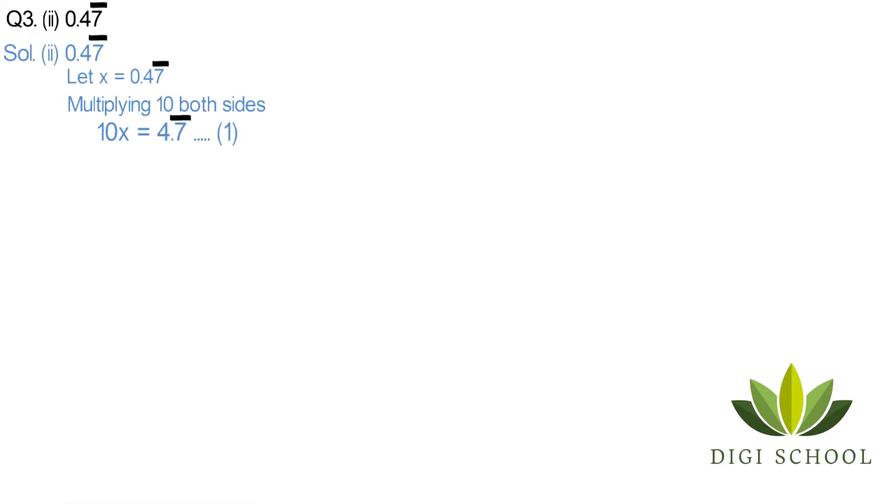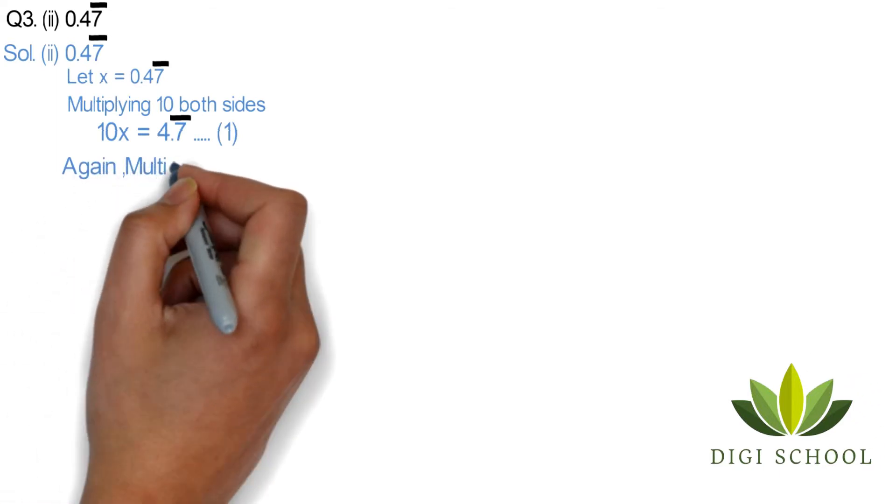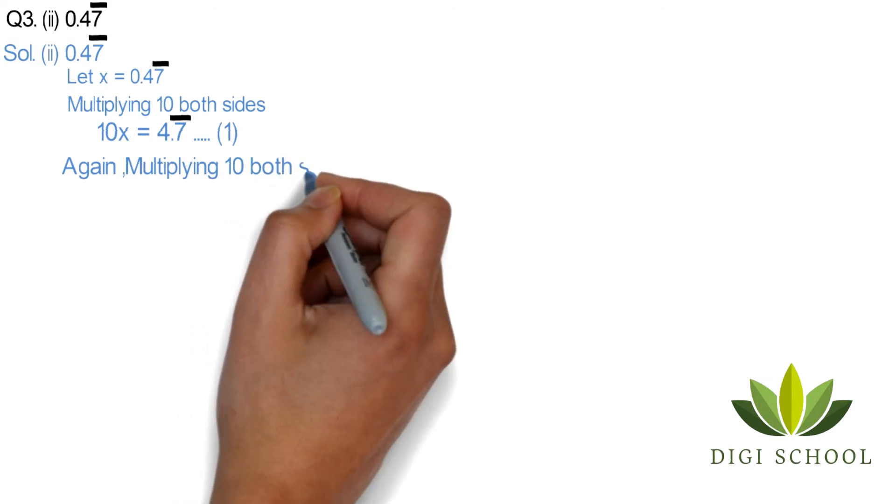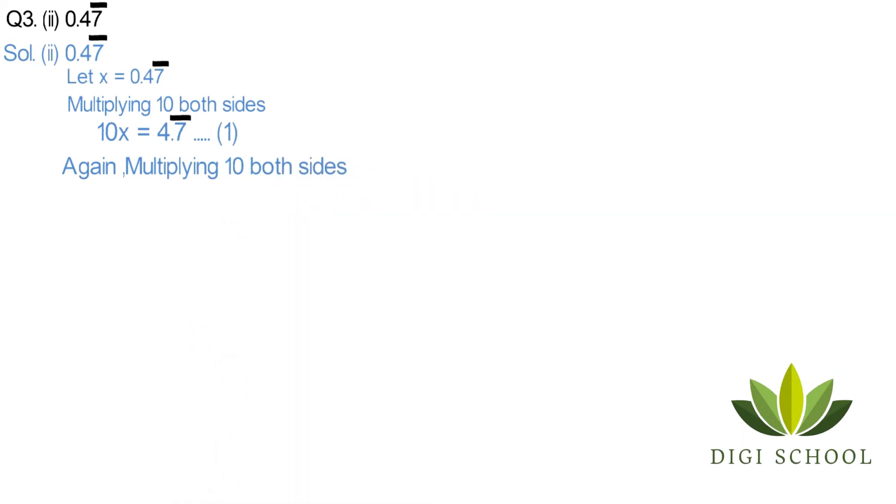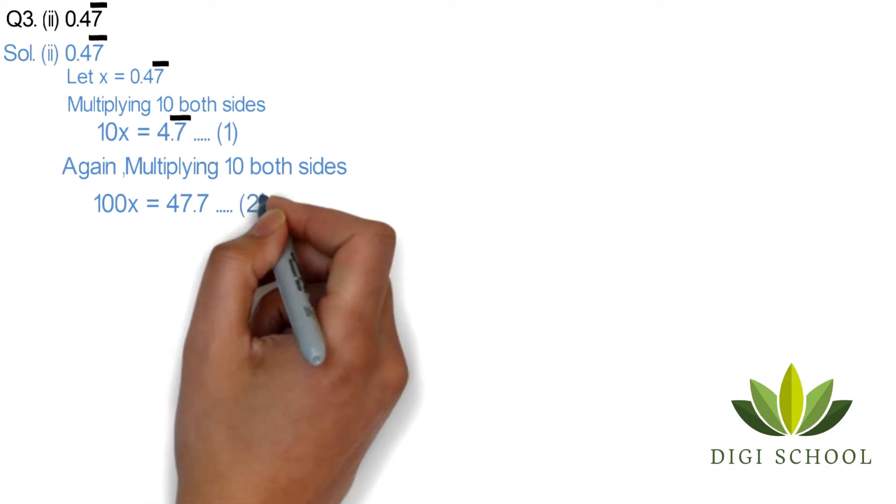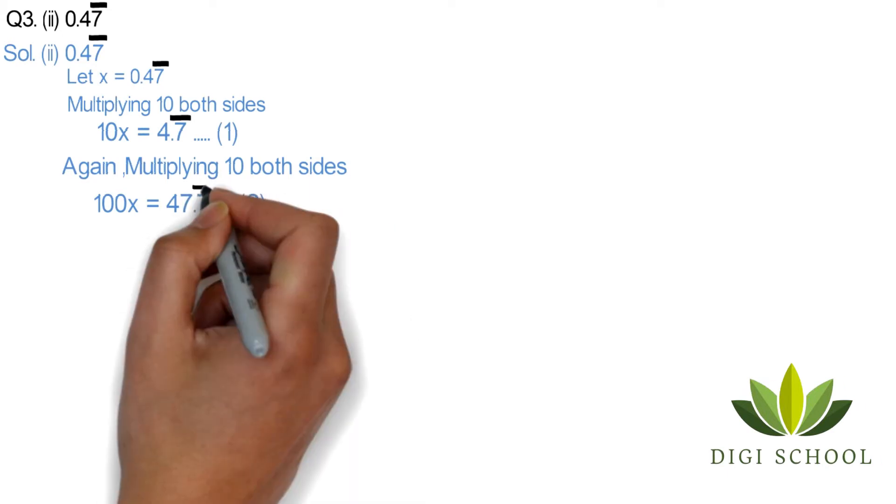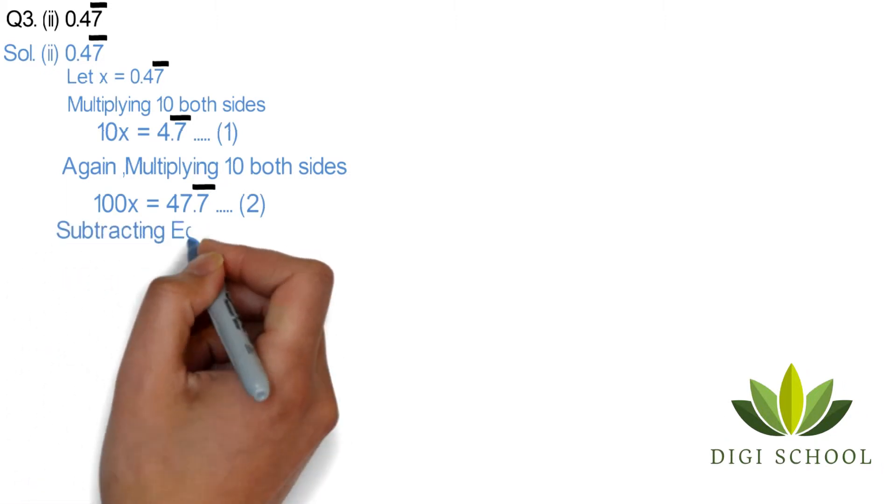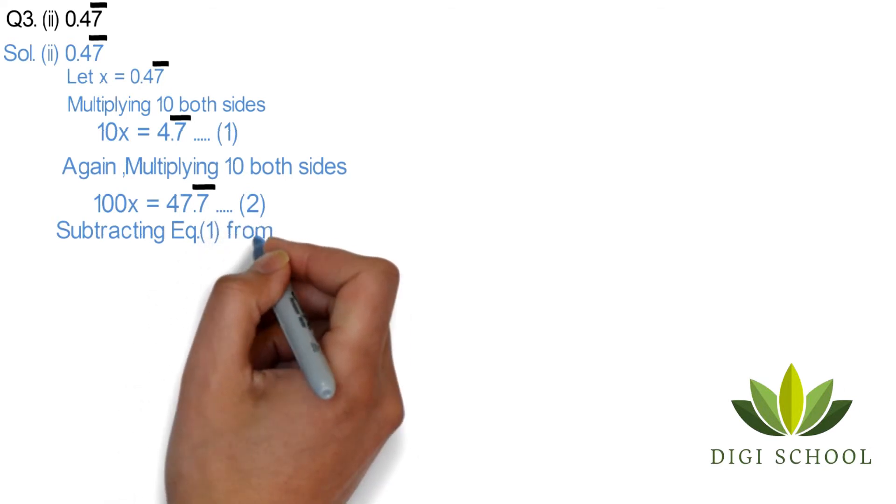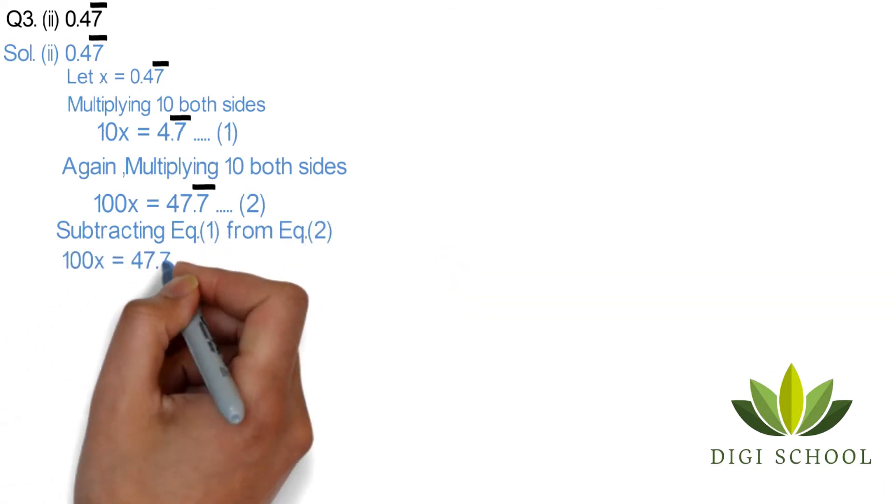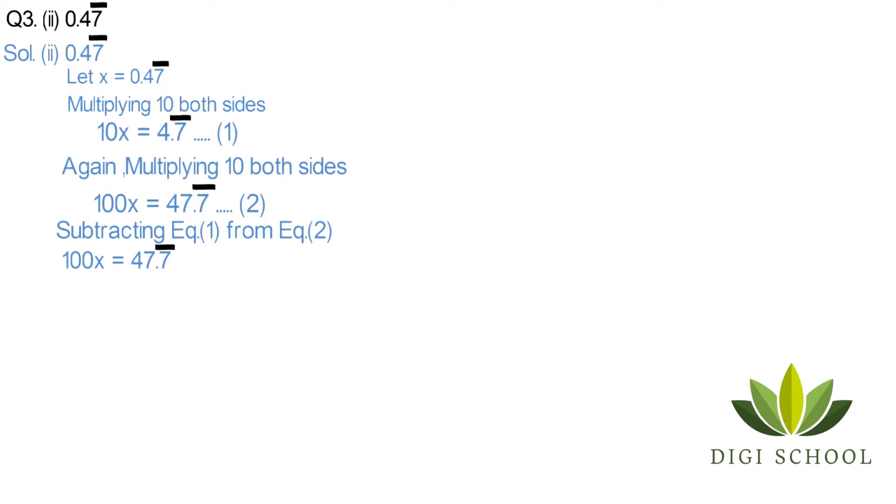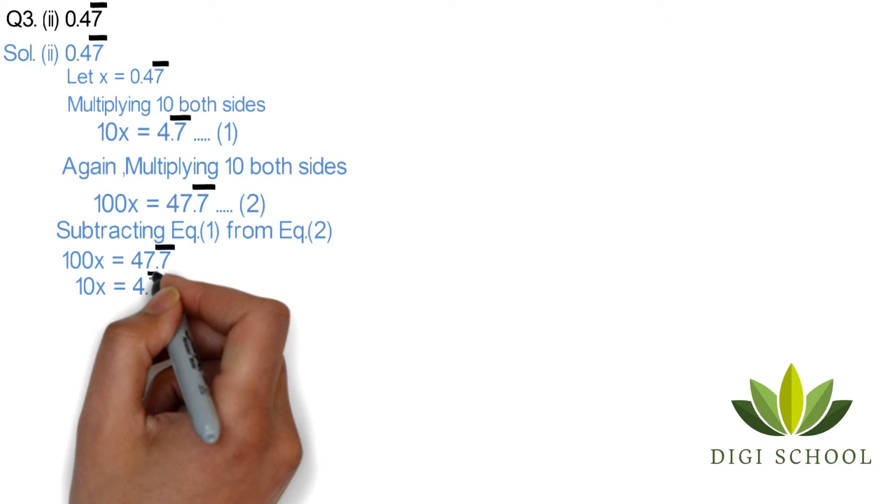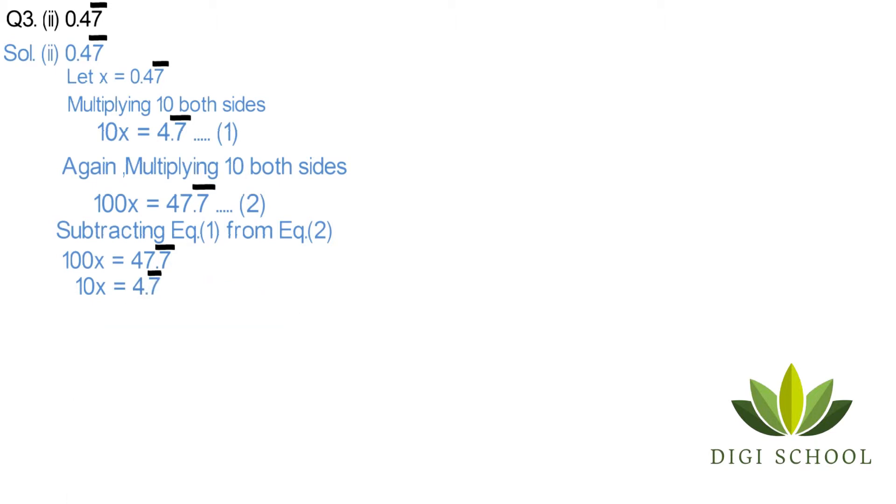But this time our first equation would be 10x equals 4.7 bar. Again multiply both sides by 10, because this time we want our 7 bar to be left of the point. So 100x equals 47.7 bar—this would be equation 2. We will be subtracting equation 1 from equation 2, so 100x equals 47.7 bar minus 10x equals 4.7 bar.